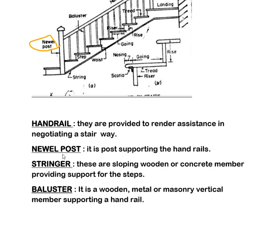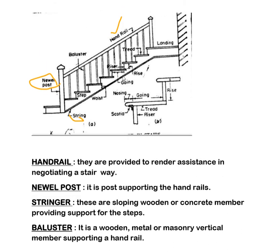The next component part is stringer. This sloping part is known as a stringer. Stringers are sloping wooden or concrete members providing support for the steps. The next component part is baluster. It is a wooden, metal, or masonry vertical member supporting a handrail.